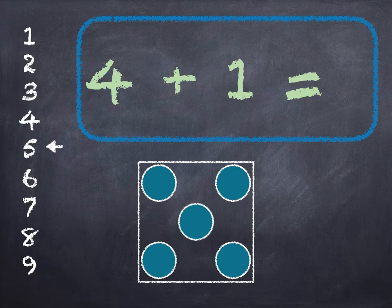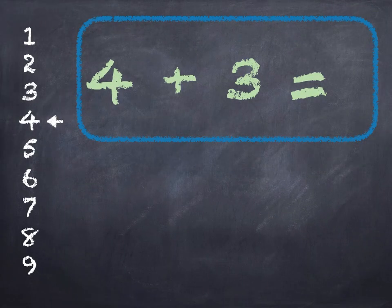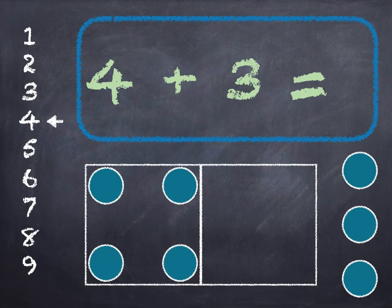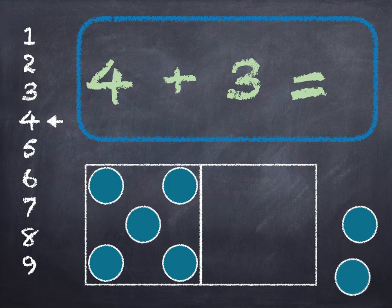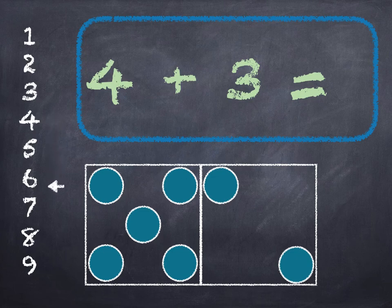4 plus 3. 4 in the box, add 3 on. 4, 5, 6, 7. Start at 4 on the number line and go down 3. 1, 2, 3. We get to 7.